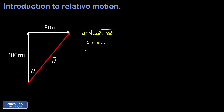We also want the direction of the motion of this plane with respect to the ground. We use the inverse tangent for that — it's the angle whose tangent is 80 over 200 — and this gives about 21.8 degrees. Since the plane traveled 215 miles with respect to the ground in one hour, its speed was 215 miles per hour.